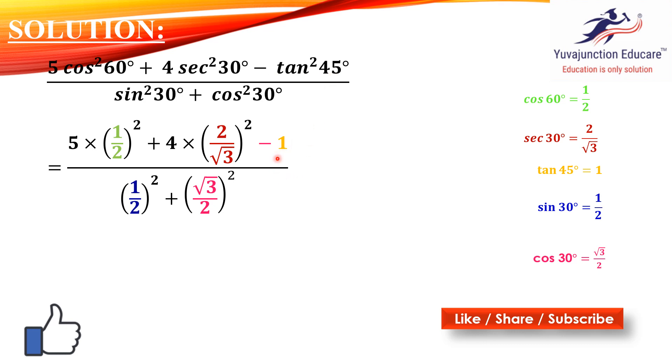Sin²30 is (1/2)², it is squared. Why? Because we have given it sin²30. Cos 30 is (√3/2)². Now we have to do it.